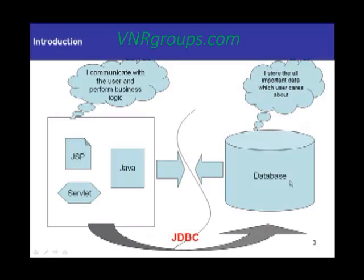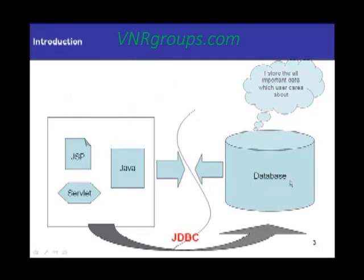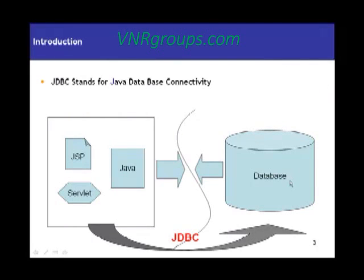This is where JDBC comes into the picture. JDBC bridges the gap between your front-end application — and it need not even be a web application, it could be a simple Java file you are trying to execute — and the database. It provides a medium to communicate with the database, fetch results from the database, and also store results to the database. As we said earlier, JDBC stands for Java Database Connectivity, and the name itself implies that it is providing you connectivity to the database from Java.